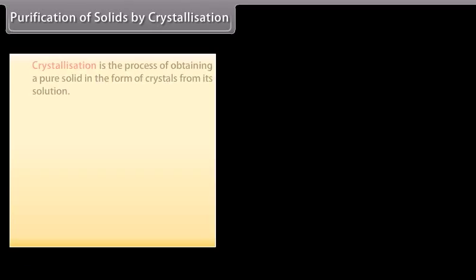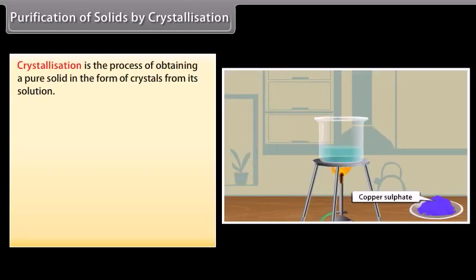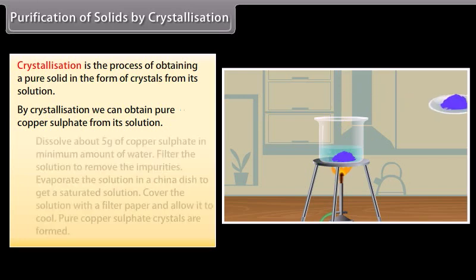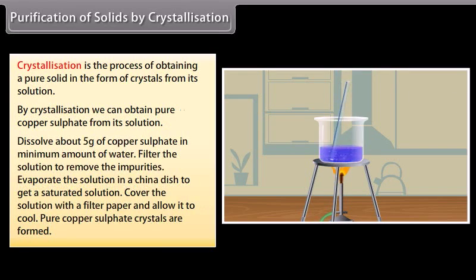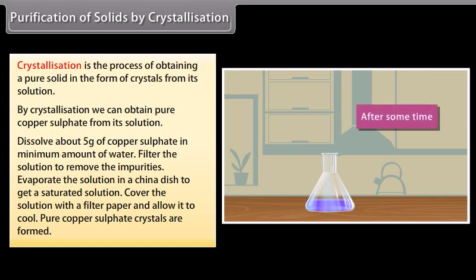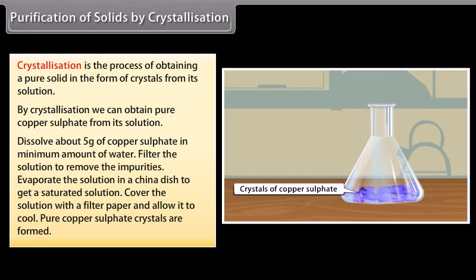Purification of solids by crystallization. Crystallization is the process of obtaining a pure solid in the form of crystals from its solution. By crystallization we can obtain pure copper sulfate from its solution. Dissolve about 5 grams of copper sulfate in minimum amount of water. Filter the solution to remove the impurities. Evaporate the solution in a china dish to get a saturated solution. Cover the solution with a filter paper and allow it to cool. You will see pure copper sulfate crystals are formed.